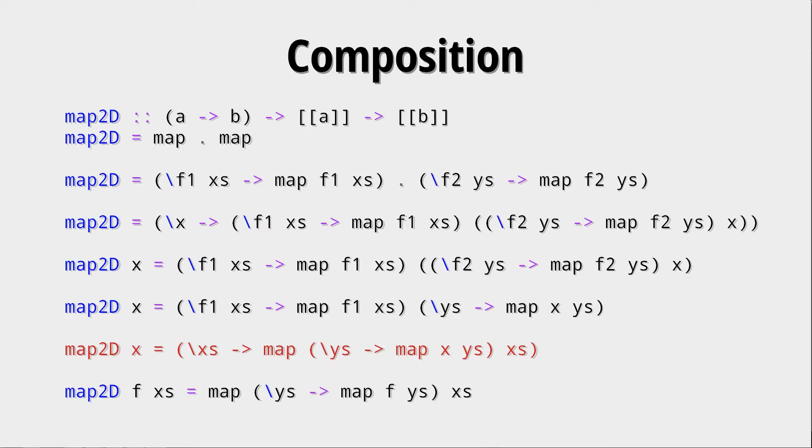Now in the next step, another interesting thing is happening, because the first anonymous function is f1 to xs to map f1 xs. So f1 is a function, as we know, that takes one argument and gives us some result. Now if we look at the anonymous function we have in the back, ys map to xys, that is exactly that function. So now we can replace f1 with this anonymous function. And after that we don't have to do much, because now we have the xs in the anonymous function here, that we can take into the argument list of map2d.